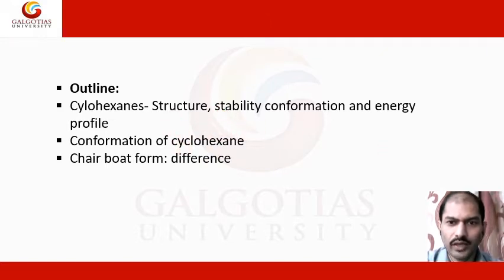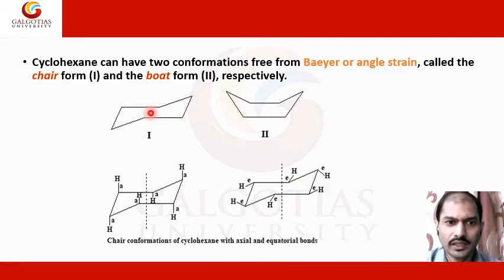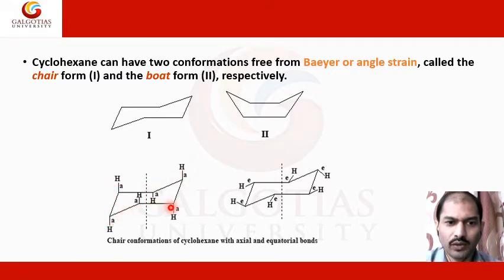Starting with cyclohexane, we look at the actual structure. The conformation in the free form includes the chair form and the boat form respectively. This is a chair form and this looks like a boat, called the boat form. In the chair conformation of cyclohexane, you can see axial and equatorial bonds — 'a' represents the axial bond with the substituted group. In cyclohexane with no substitution, one hydrogen will lie along the axial position and the other in the equatorial position.